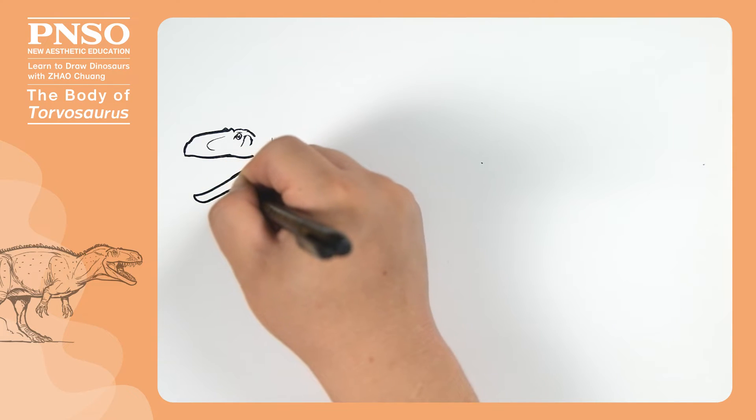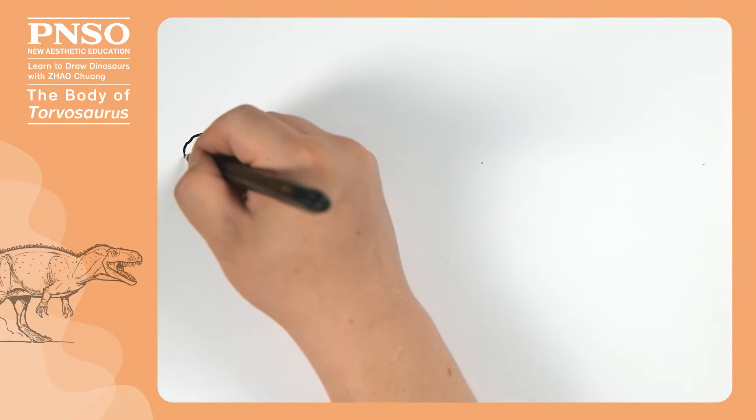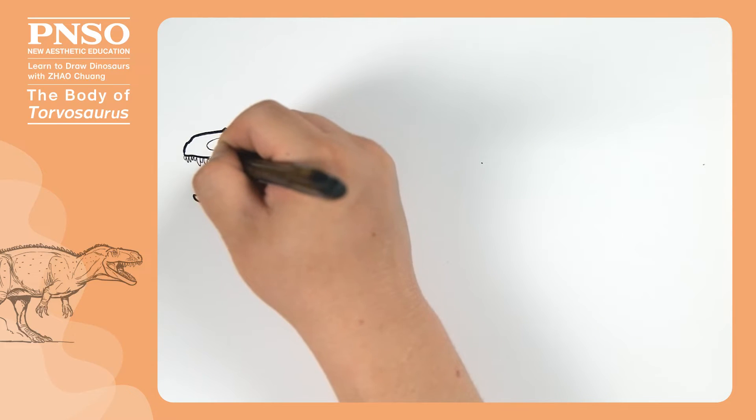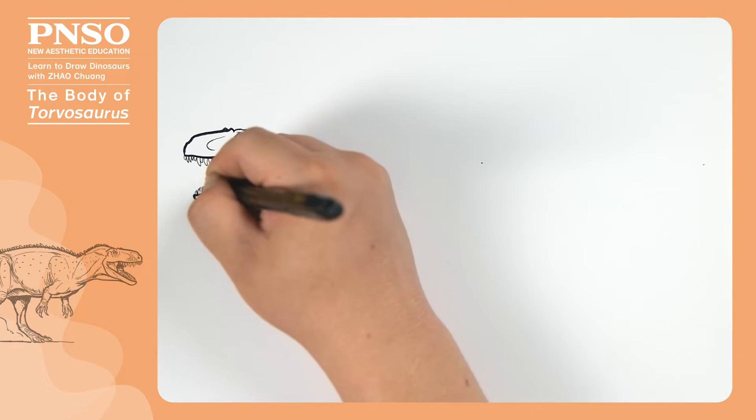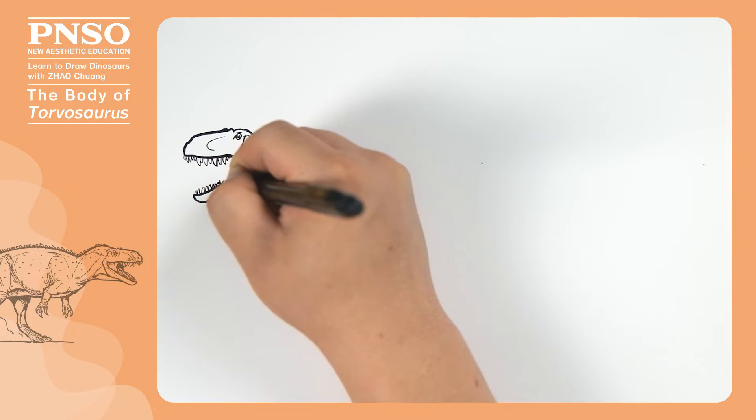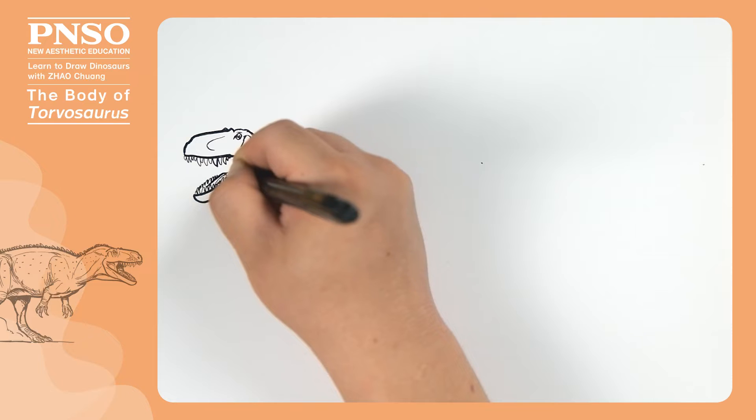The tip of the lower jaw was slender, while the muscles at the cheek were thicker. The four front teeth on the upper jaw were short. The teeth became larger towards the back. Right up to the front of the eyes, the teeth became tiny. The same goes for teeth on the lower jaw, which were generally smaller than those on the upper jaw.